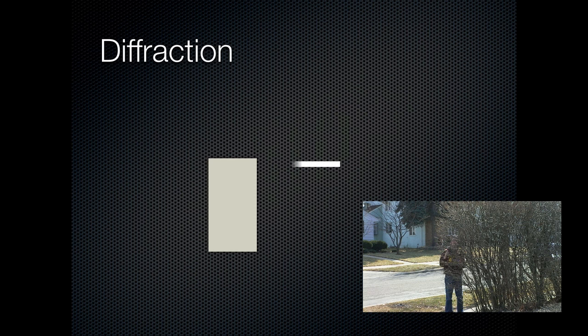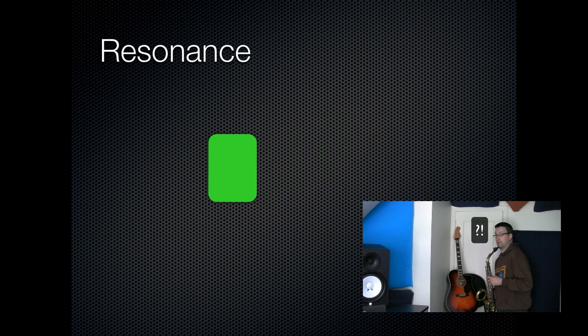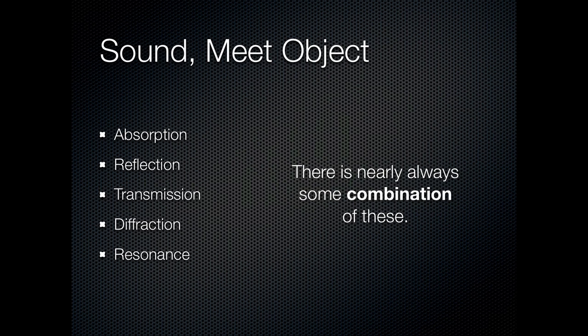Diffraction is where a sound wave bends around an object — this usually happens with relatively large waves or bass sounds and fairly small objects. Resonance happens when an object tends to vibrate at a certain frequency and sound waves in the area contain partials of that frequency or multiples of it. Nearly always in the acoustic world, you've got lots of combinations of these things happening all at once. There's also a phenomenon known as diffusion, which is reflection but where different partials are sent in slightly different directions, spreading out the sound's ingredients.